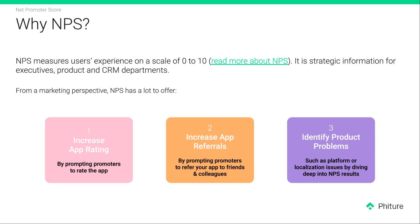The next thing I want to talk about is NPS. NPS is basically a metric that organizations use to calculate the overall happiness or potential unhappiness that the app's users may feel with the product. It's great from a marketing perspective — for example, you can use it to increase an app's rating by filtering out users that indicate through their NPS score that they're happy, and asking those users to give a rating on the app stores. You can also use it to increase app referrals in a similar way, and to identify key problem areas of the app that may not be obvious to developers in their everyday work.